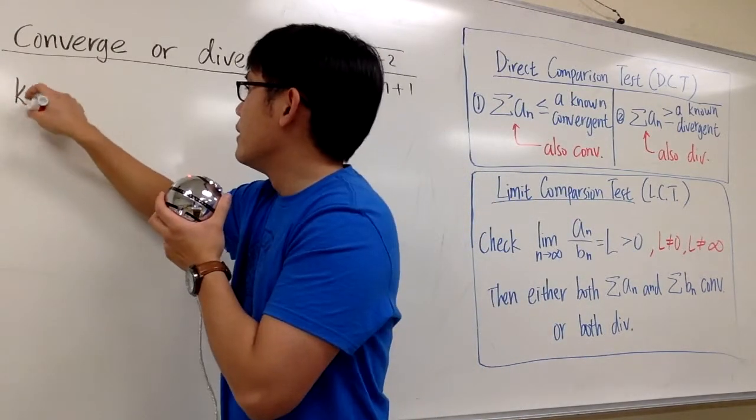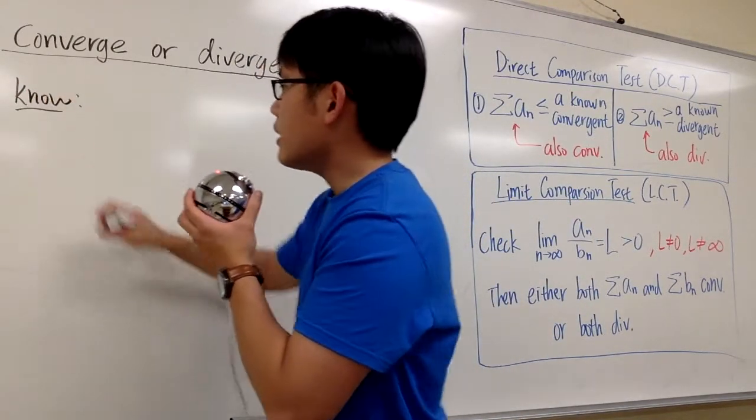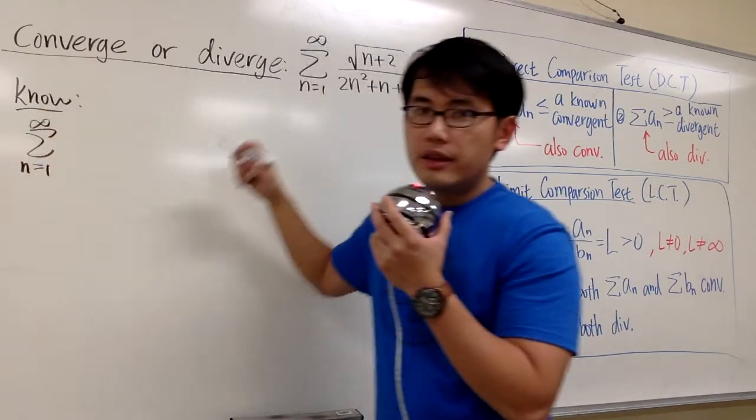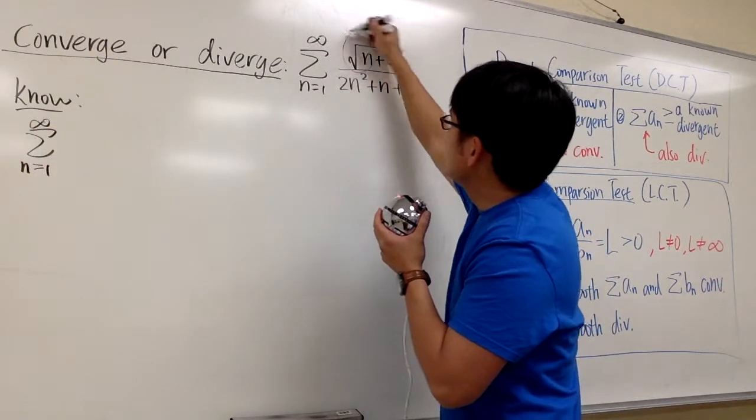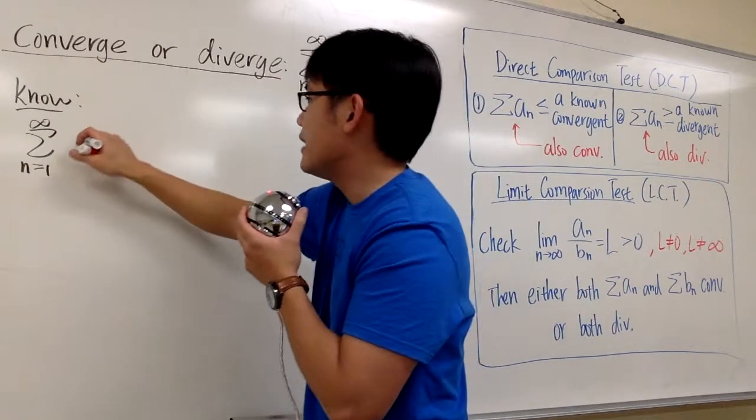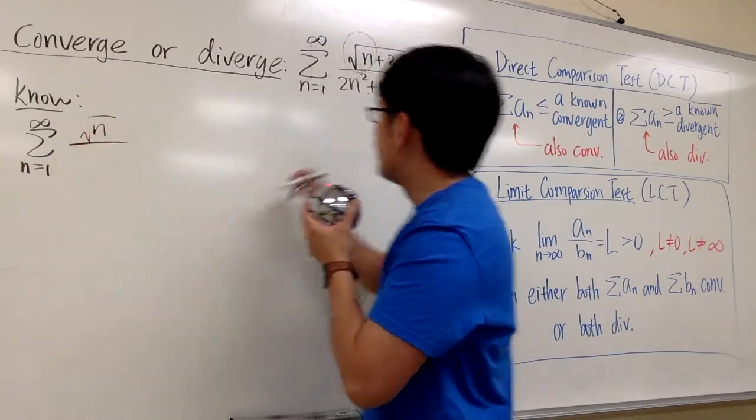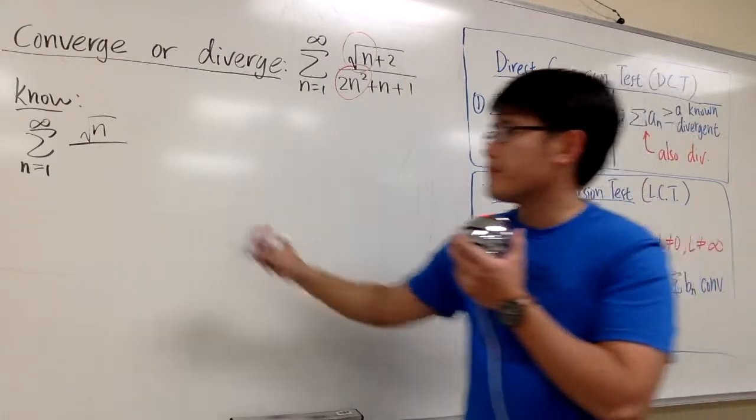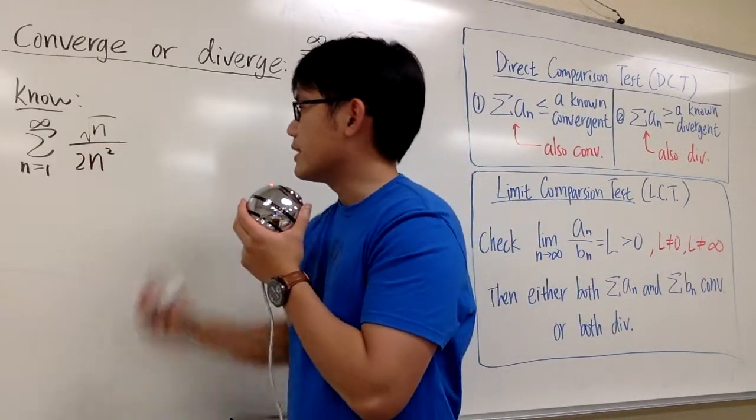Let's put down what we know. Let's just consider sigma as n goes from 1 to infinity, the top, which is just the square root of n because that's dominating, right? Over the denominator, let's just consider the 2n squared.